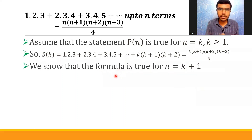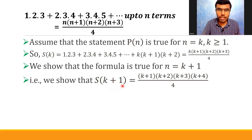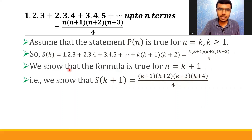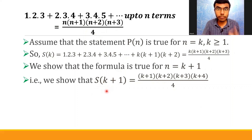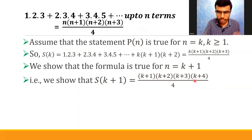Now I have to show that the given statement is true for n=k+1. That is, we have to show that S(k+1) = (k+1)(k+2)(k+3)(k+4)/4. In the formula n(n+1)(n+2)(n+3)/4, put n=k+1: you get (k+1), (k+1+1)=(k+2), (k+1+2)=(k+3), (k+1+3)=(k+4), divided by 4. So this is what I need to prove.